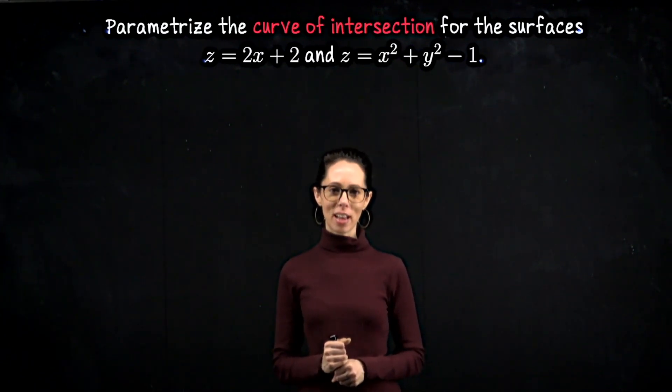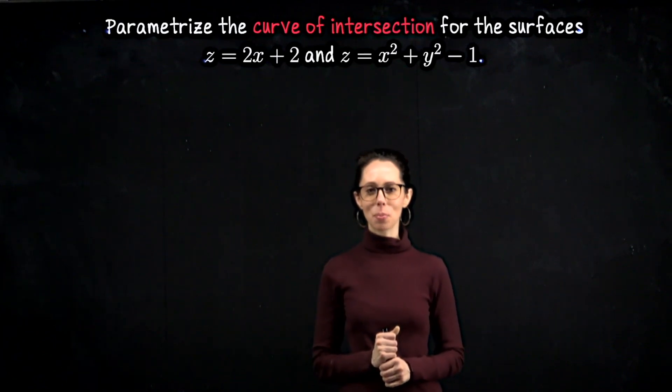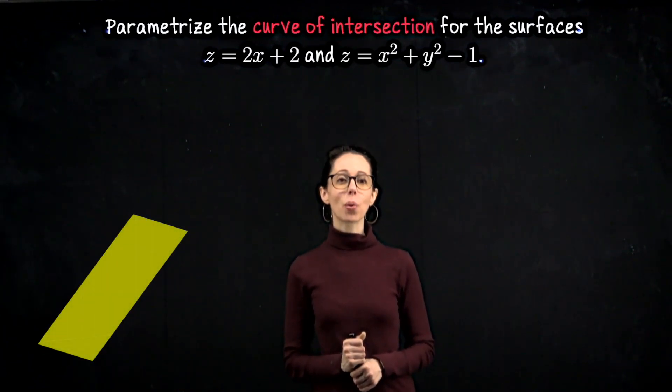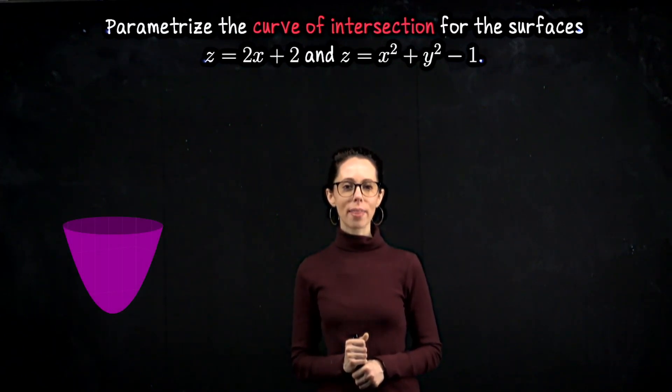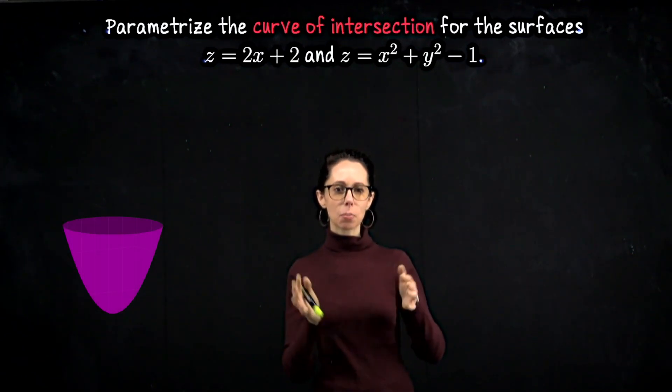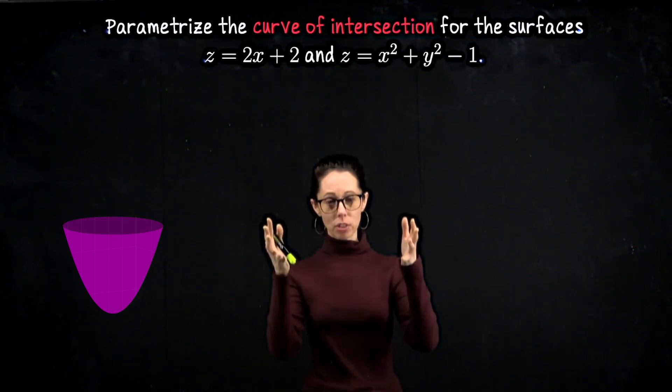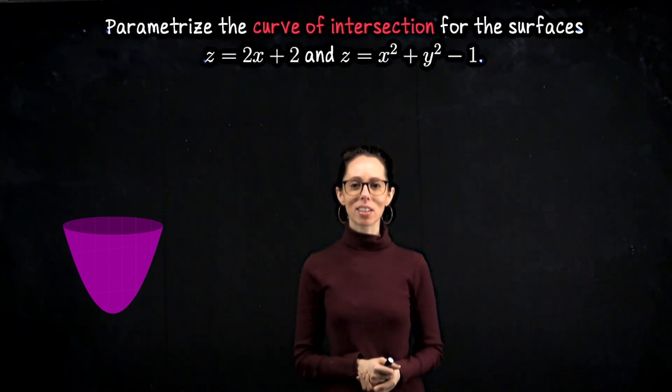Let's take a moment and visualize these surfaces because they're pretty recognizable. So z equals 2x plus 2, that's going to be a plane, and then z equals x squared plus y squared minus 1, that's a paraboloid. It's like your classic paraboloid, but that minus 1 means we've just shifted it down one unit so that the z-intercept is negative 1.